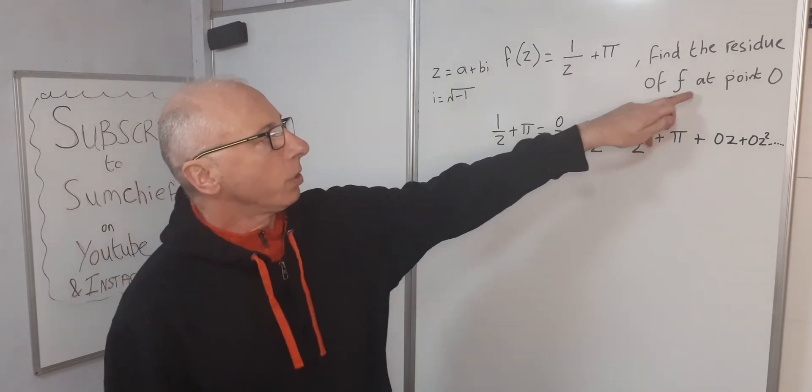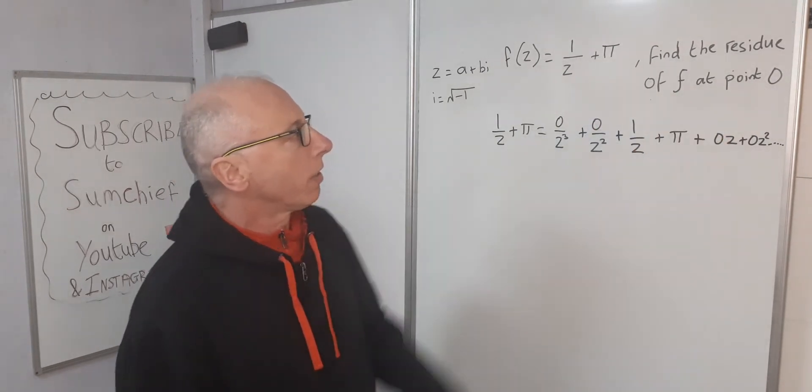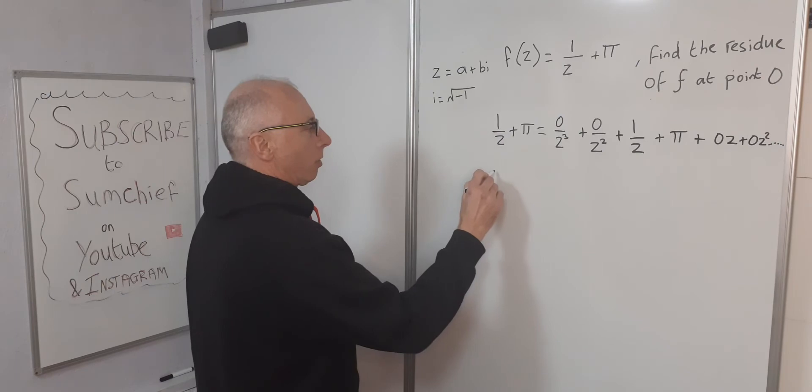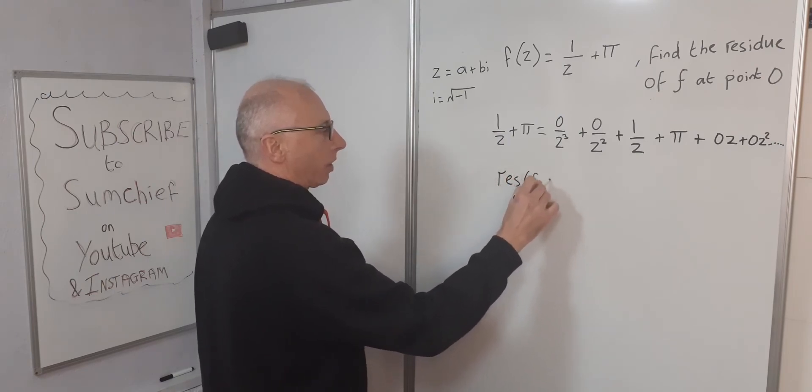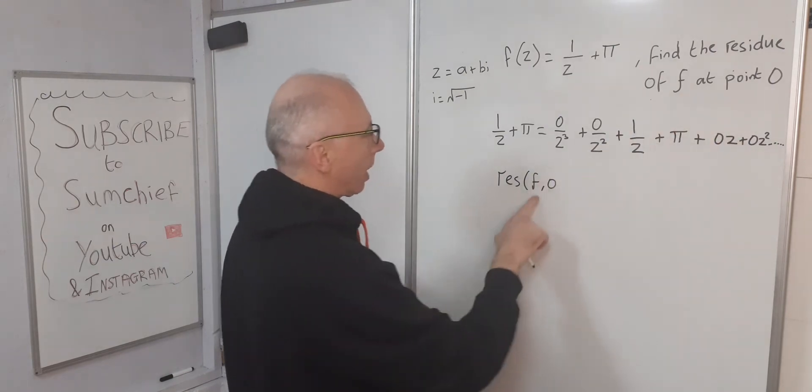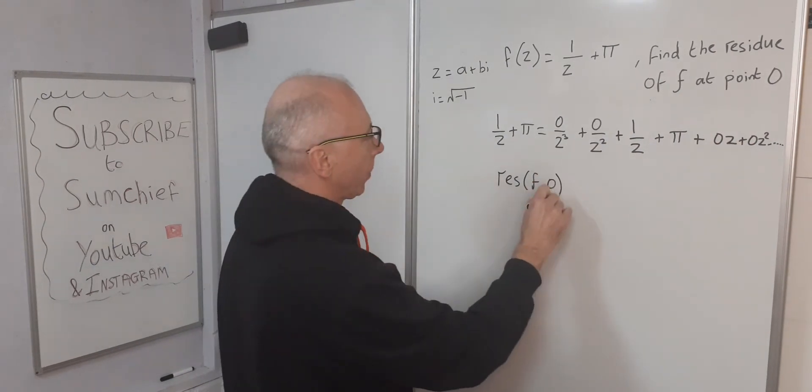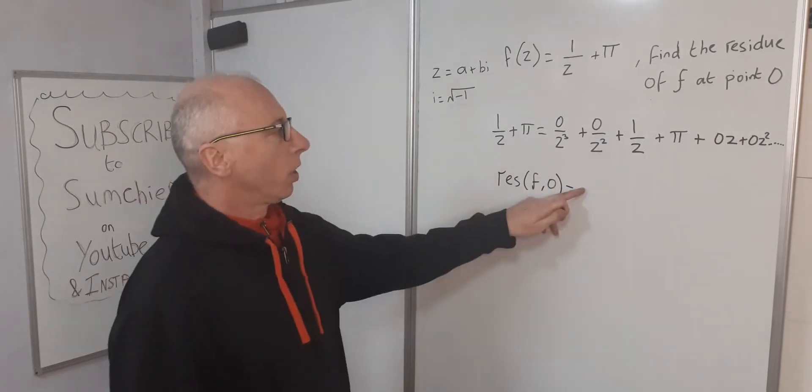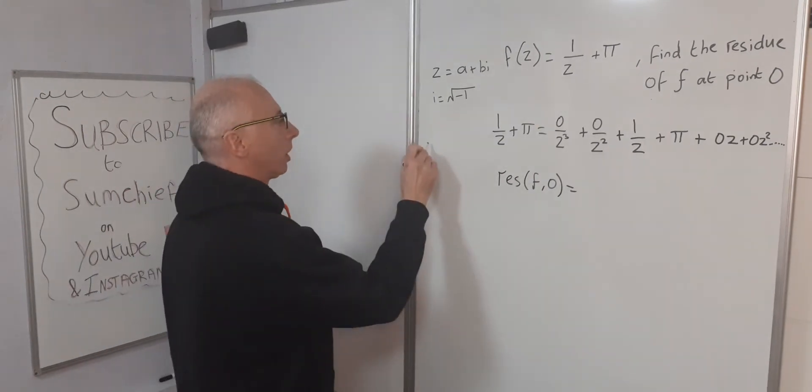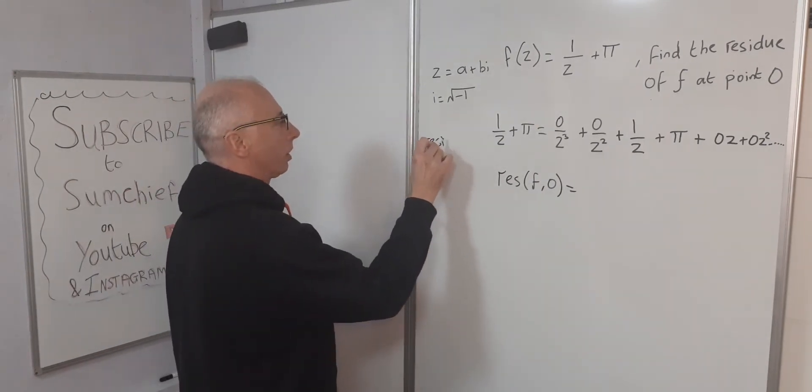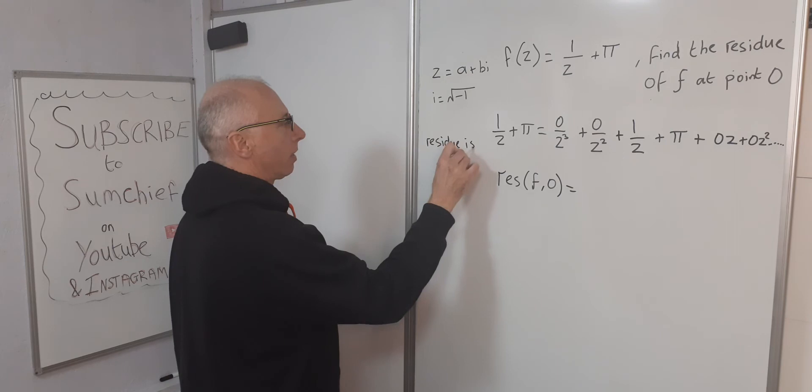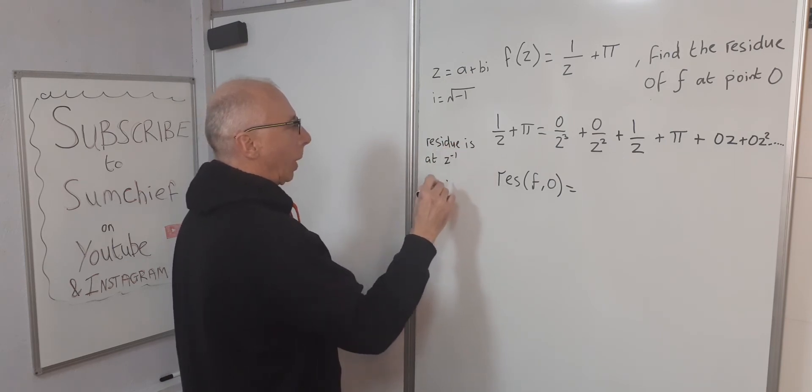We've been asked to find the residue of the function f at point zero. So what we say is that the residue of f comma zero - that's how we would write this down - equals... we're looking for the coefficient. The residue is at z to the minus one, and we're looking for the coefficient.